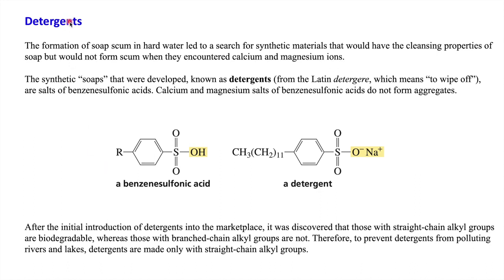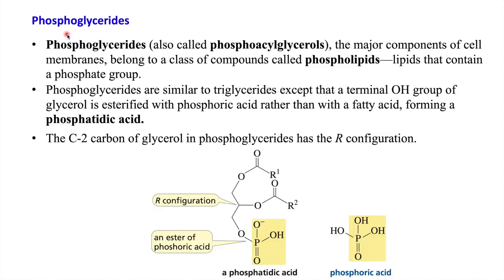To remove the disadvantages of soap — bathtub rings and soap scum — scientists discovered detergents. In detergents there is a benzene sulfonic acid group instead of a carboxylic group. Benzene sulfonic acid does not form aggregates with calcium and magnesium, so detergents can be used in hard water. Scientists also found that straight-chain alkyl groups are biodegradable, while branched alkyl chains are not, so modern detergents are made with straight-chain alkyl groups to prevent river and lake pollution.